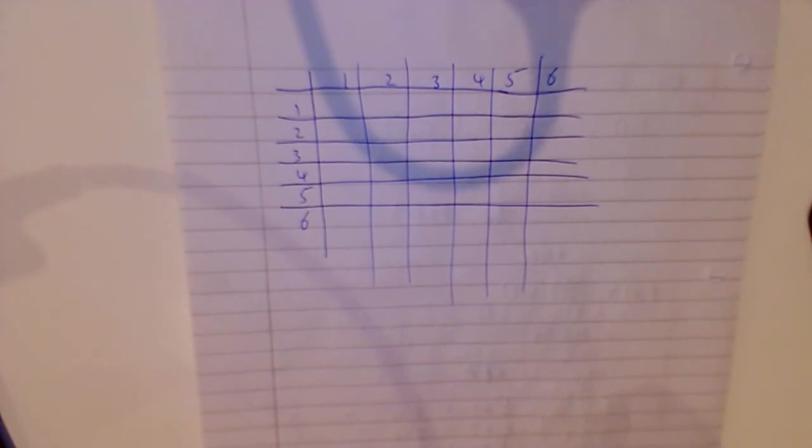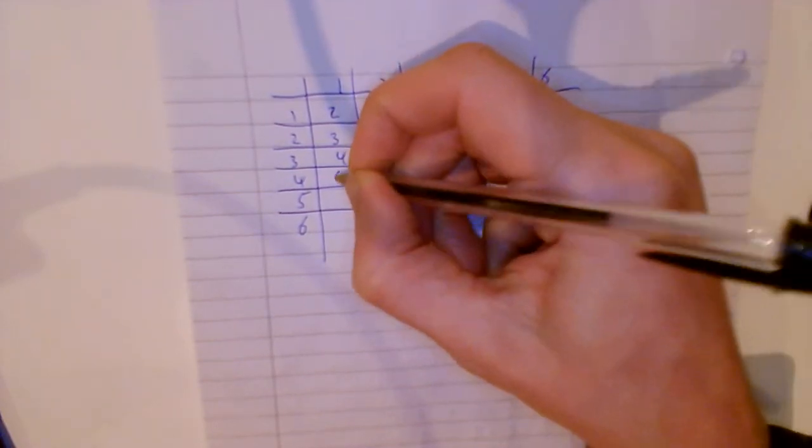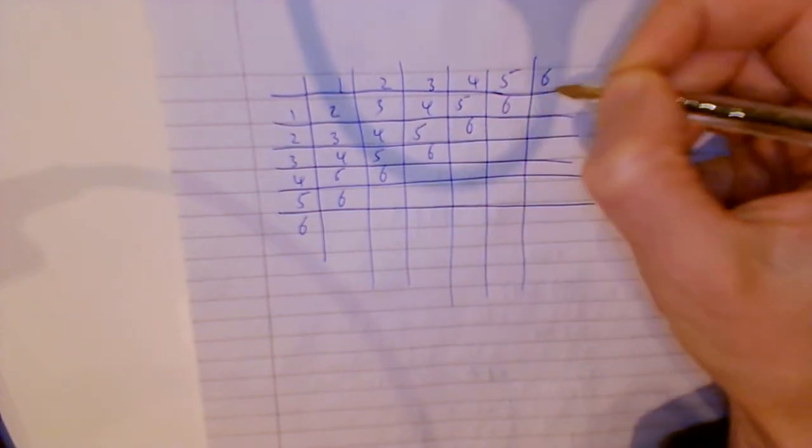And you gotta really read the question when it comes to these. If it says the product, the product means you're multiplying them. If it says the sum, the sum means you add them. So that'd be two, three, three, four, four, four, four, four, five, five, five, five. I think the game in Vegas is called craps for this.